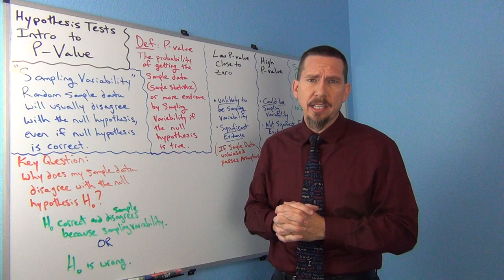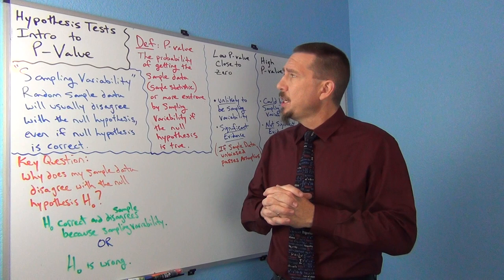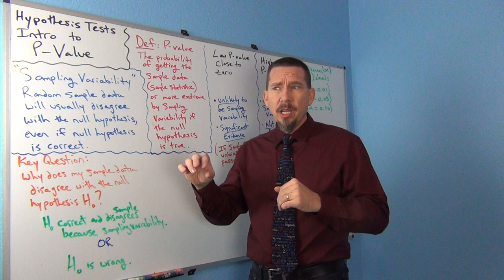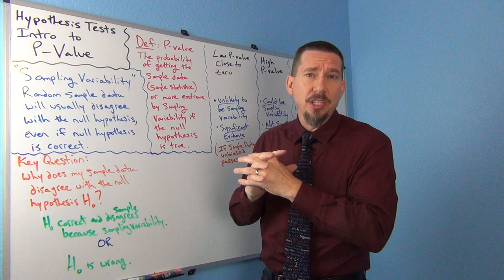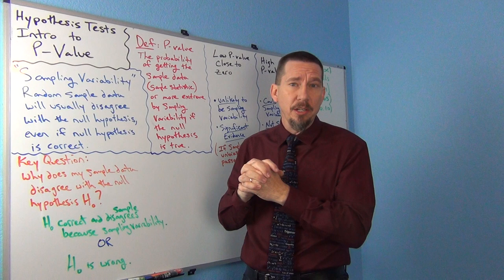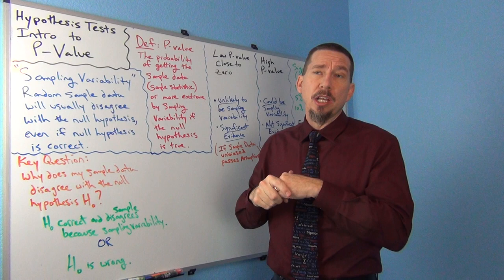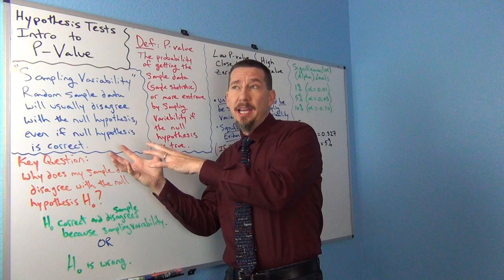So let's talk a little bit about how a hypothesis test works. We've been going through hypothesis testing. We saw that there was a null hypothesis — a statement about the population that has an equal-to part — and there's an alternative hypothesis, a statement about the population that does not have an equal-to part. We saw last time that the test statistic measures how far the sample data is from the null hypothesis.